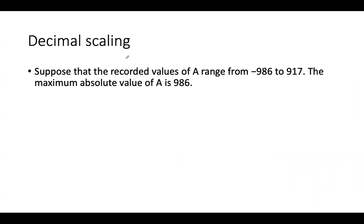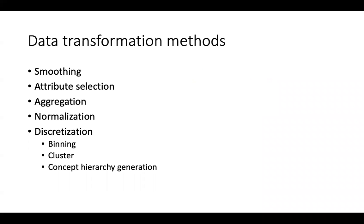The last normalization method is decimal scaling. Suppose you have values ranging from -9.86 to 9.17. Decimal scaling simply divides by a power of ten — in this case, divide by 1,000 since these are three-digit numbers — giving you -0.00986 and 0.00917. That's decimal scaling.